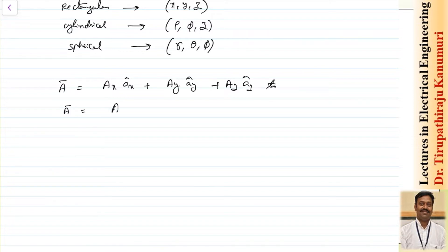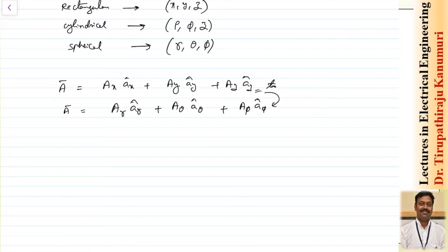In the spherical coordinate system, the components are A_R in the R direction, A_theta in the theta direction, and A_phi in the phi direction. So I have to convert the rectangular form into this spherical format. In order to do so, I need these coefficients. Since unit vectors have unit magnitude, there is no issue there.